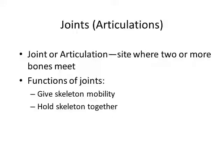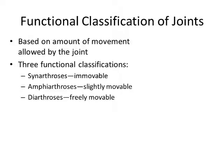First, the classification of the joints. We classify the joints based on the functions — that is the functional classification — and based on the structures that connect the bones together — that is the structural classification. Based on the functions, we divide the joints into three types.